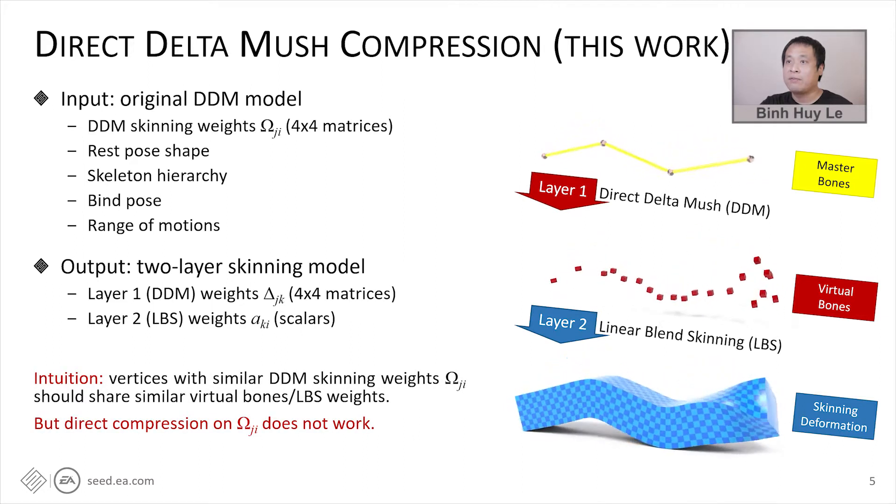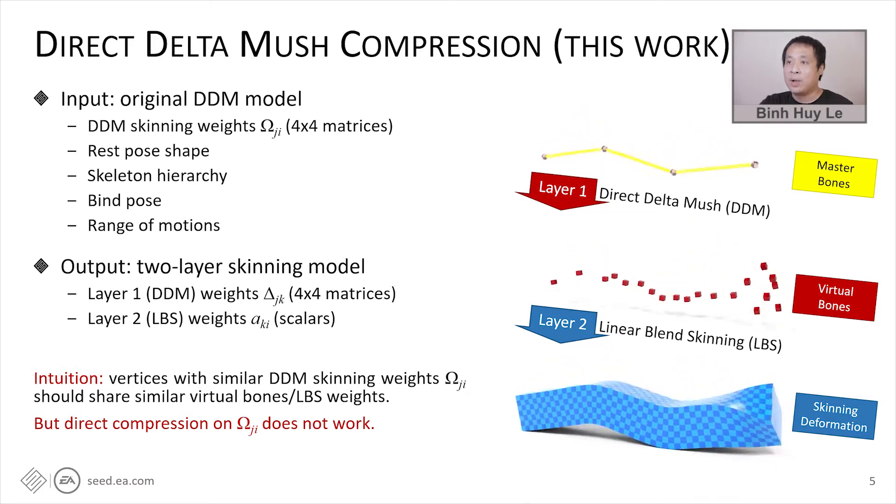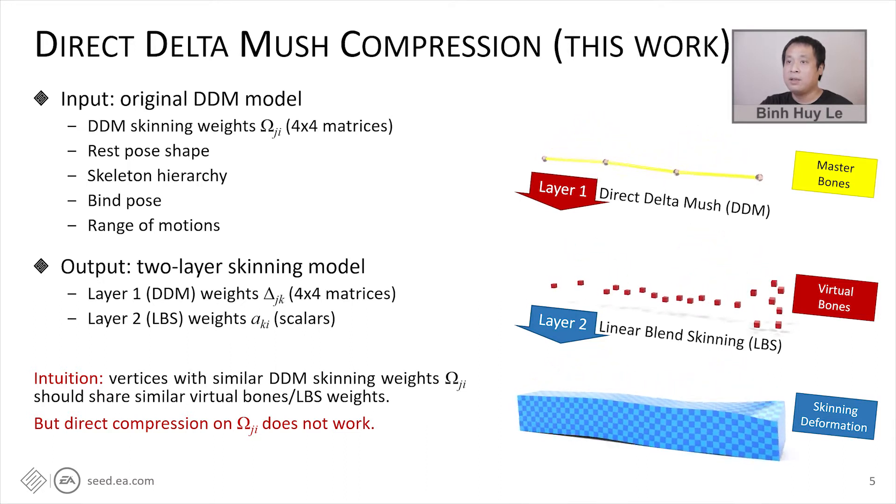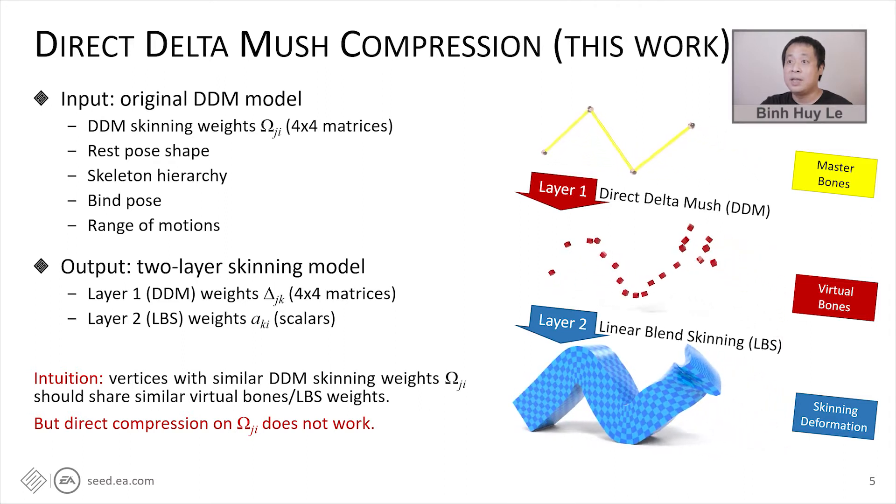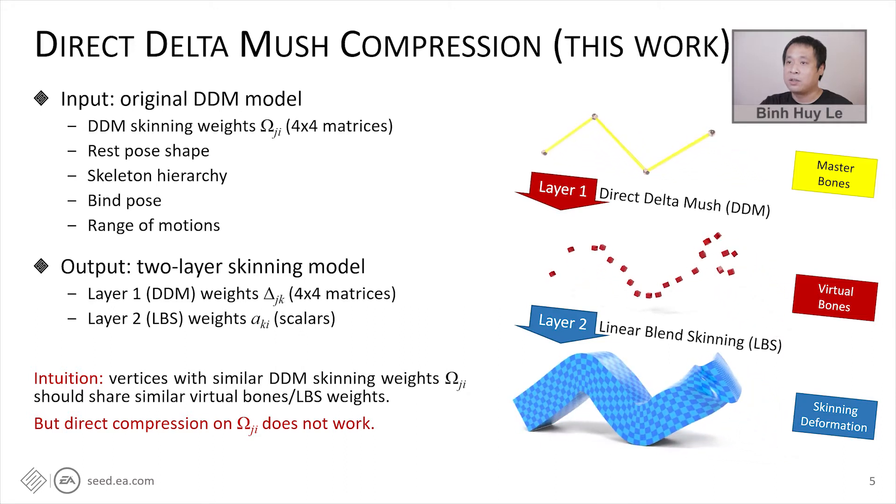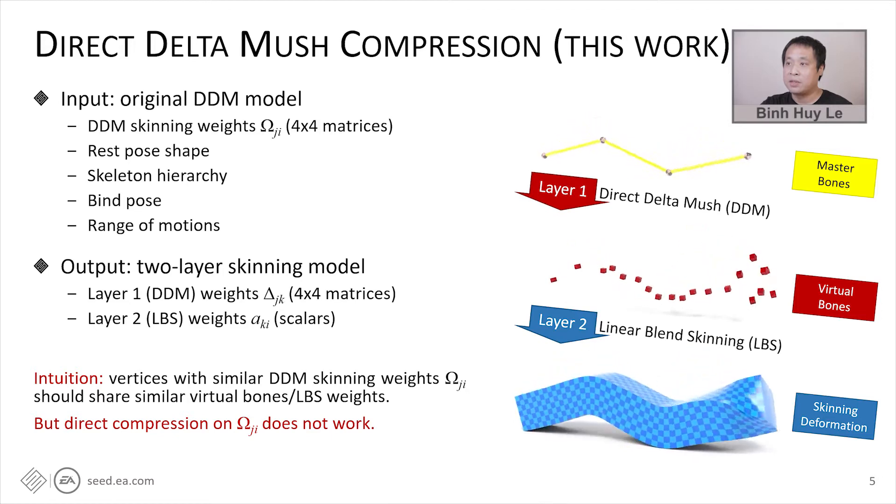Intuitively, we think that vertices with similar original DDM skinning weights should have similar skinning transformations. And therefore, we can save the computational cost by sharing the nonlinear computation across vertebrals. This intuition is similar to the other compression methods that use a small set of linear bases to approximate the original data. However, a direct compression on the original weights omega does not work because omega does not explicitly represent the skinning deformations.